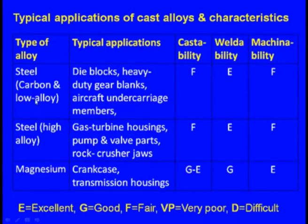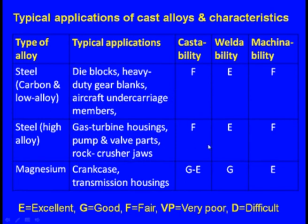Steel carbon alloys are used for dive locks, heavy duty gear blanks, and aircraft undercarriage members. Cast ability is fair, weldability is excellent, and machinability is fair. High alloy steels are used for gas turbine housings, pump and valve parts, and rock crusher jaws. Cast ability is fair, weldability is excellent, and machinability is fair. Magnesium alloys are used for crankcases and transmission housings. Cast ability is good to excellent, weldability is good, and machinability is excellent.